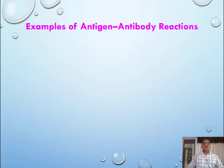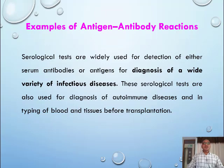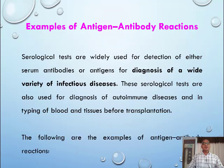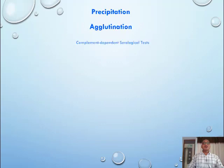Examples of antigen-antibody reactions. Serological tests are widely used for detection of either serum antibodies or antigens for diagnosis of a wide variety of infectious diseases. These serological tests are also used for diagnosis of autoimmune diseases and in the typing of blood and tissues before transplantation.